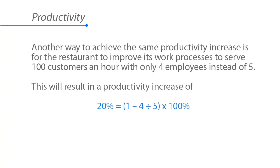Another way to achieve the same productivity increase is for the restaurant to improve its work processes to serve 100 customers an hour with only 4 employees instead of 5. So now we are reducing the number of employees instead of increasing the capacity of equipment. This will result in a productivity increase of 20% as well.